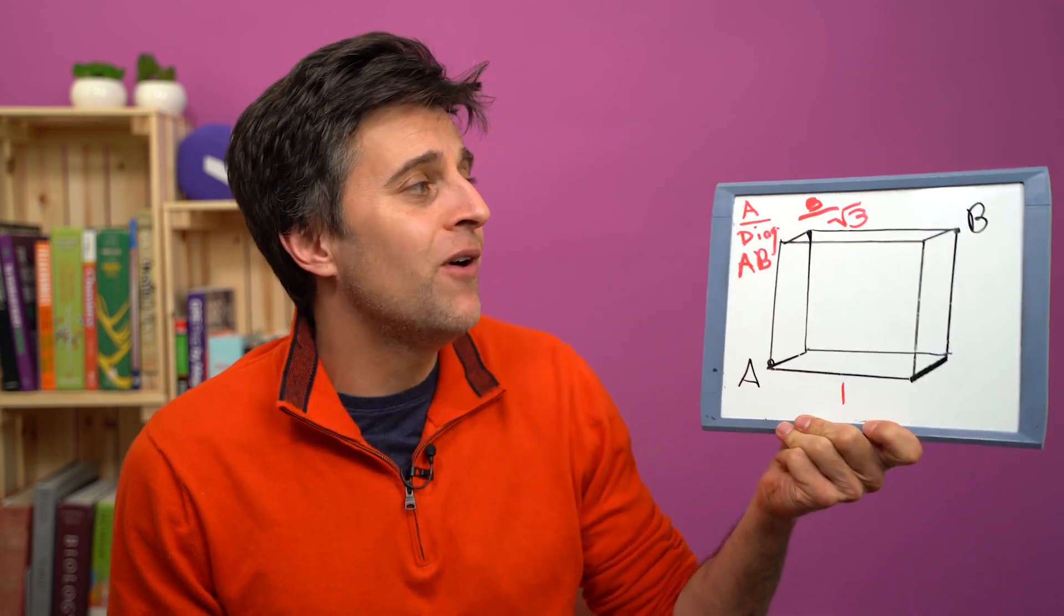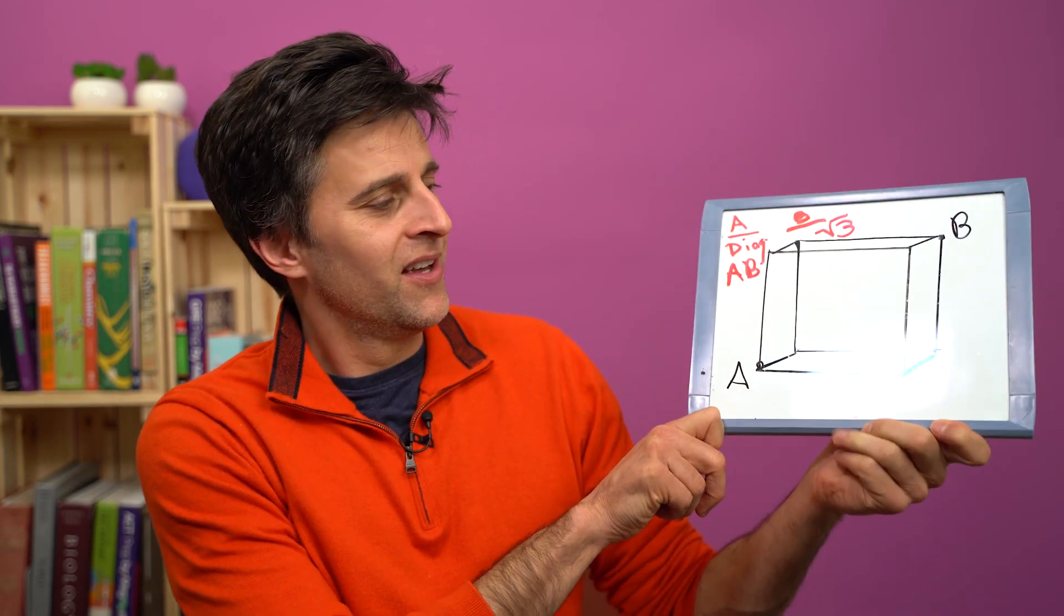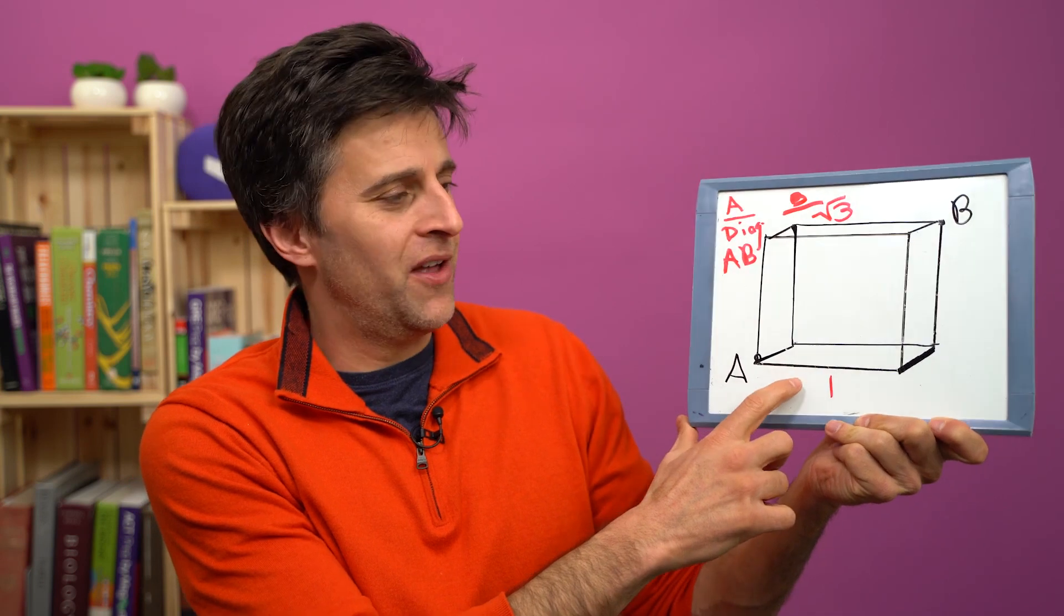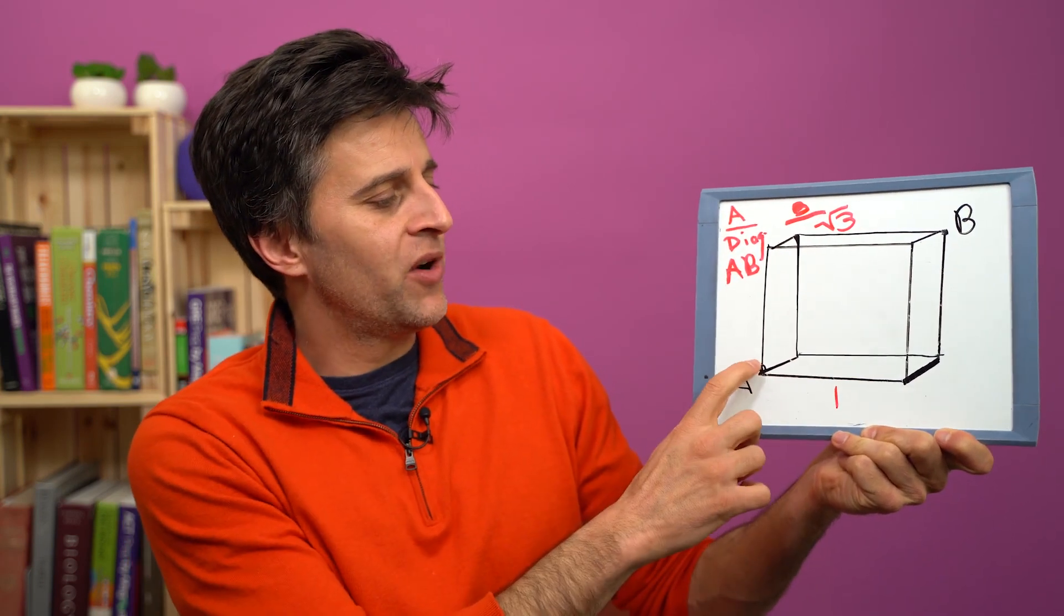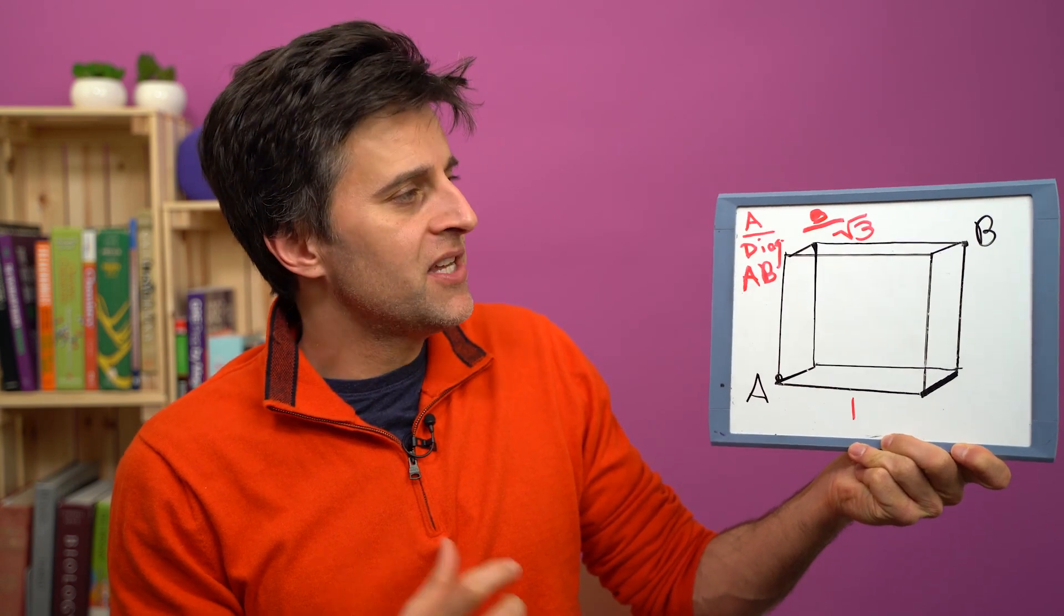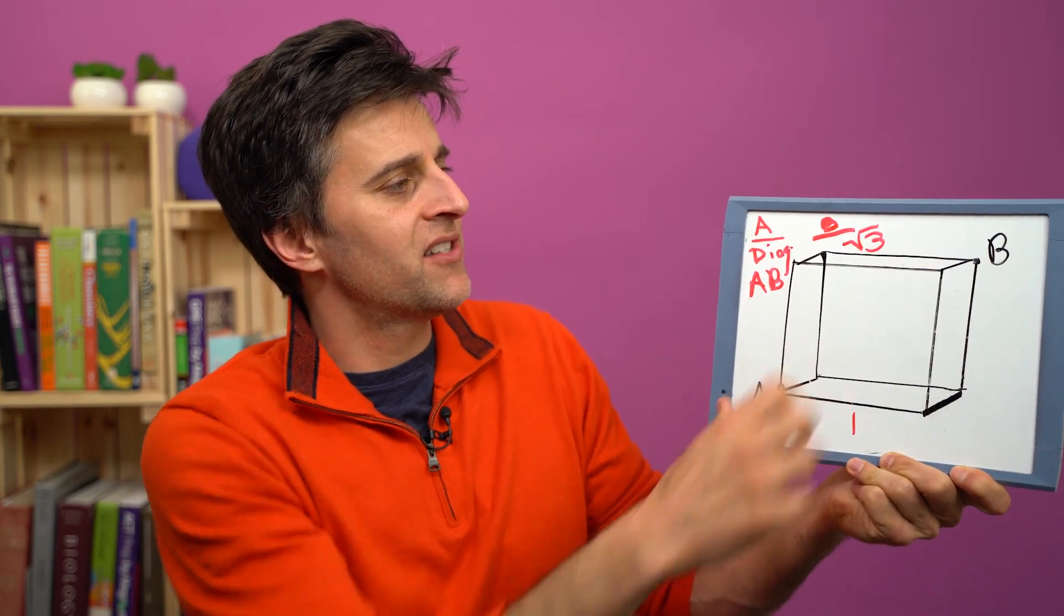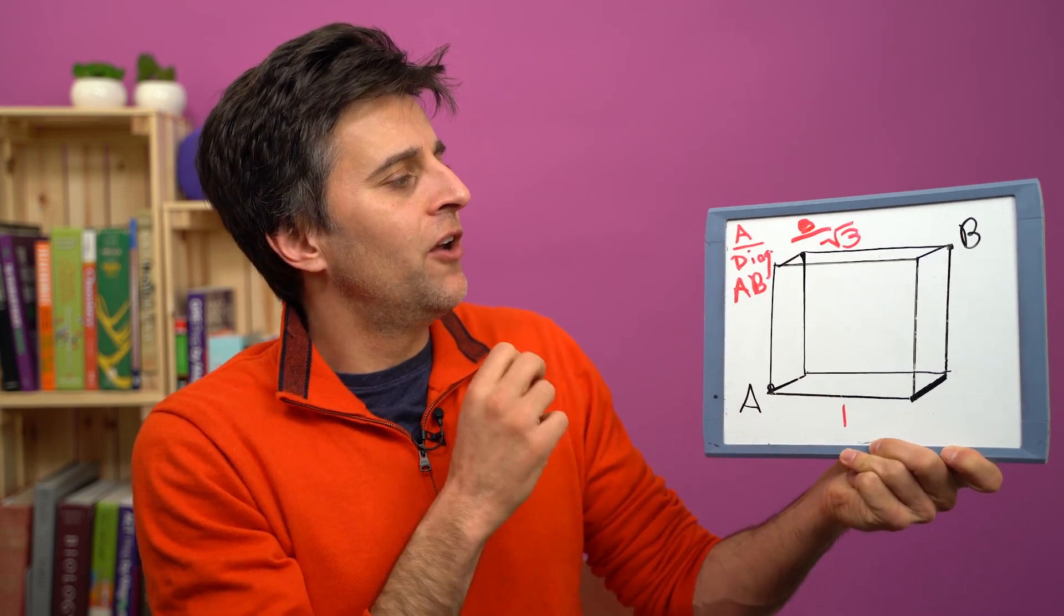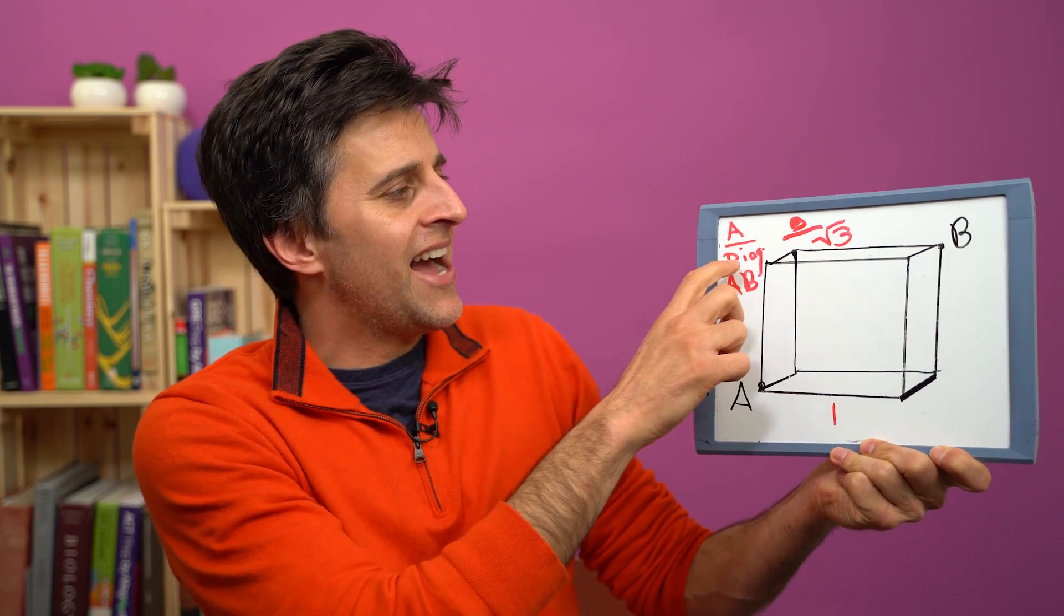In this case we have a cube. The cube has a side of one, that means all sides are one. It has point A over here and then away on the other side it has point B, basically the two farthest points in a cube.